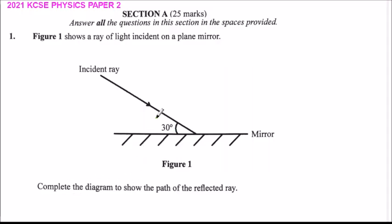To complete this diagram, we know that on reflection from a smooth surface, in this case a smooth mirror, the angle of reflection is equal to the angle of incidence in relation to the normal.